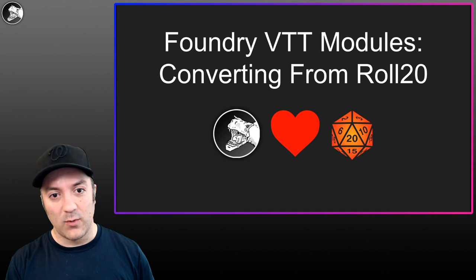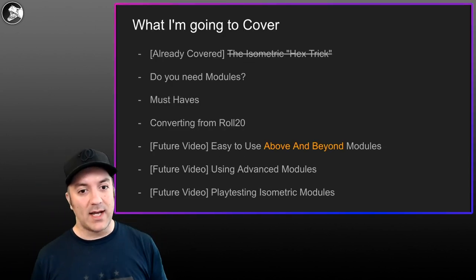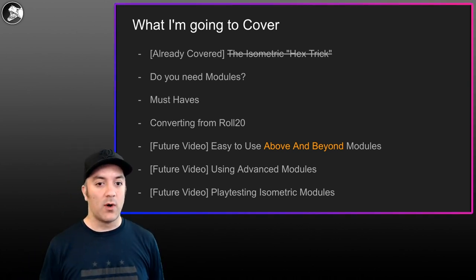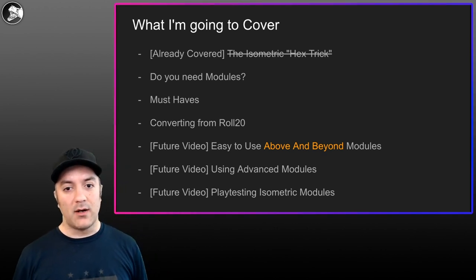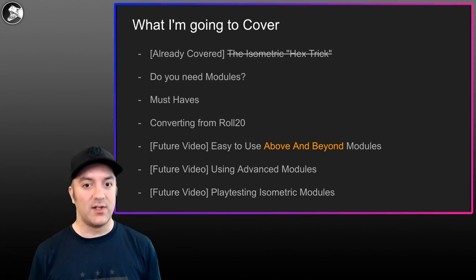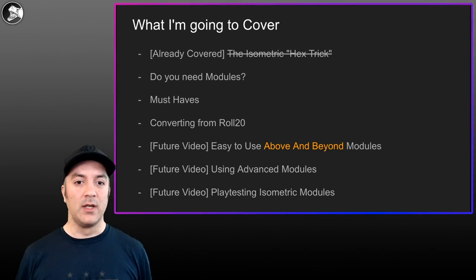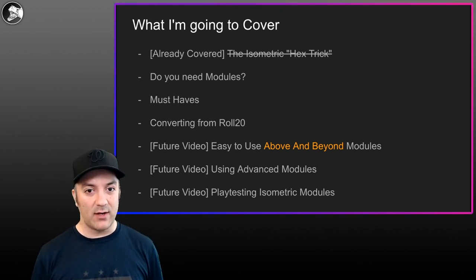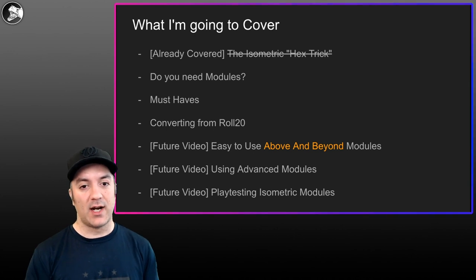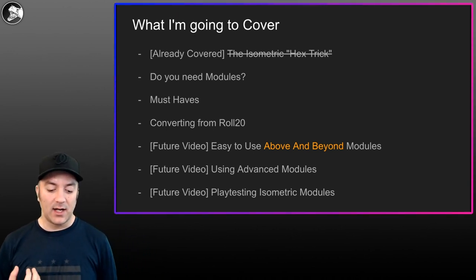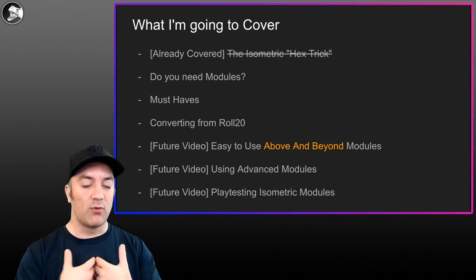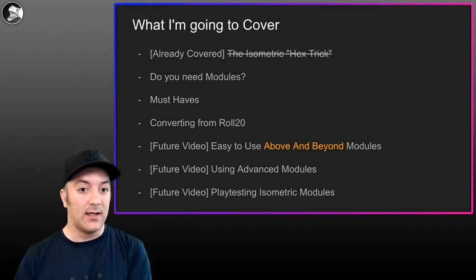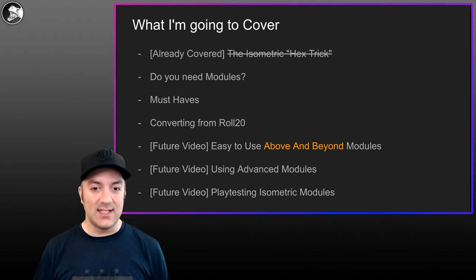First off, what am I going to cover? I have already covered my isometric hex trick — what I use to play isometric even though isometric grid support isn't fully there in Foundry VTT. In this video, I'm going to cover whether or not you actually need modules in Foundry VTT, one must-have module I highly recommend everybody install, and then a series of modules I found useful as a Roll20 person, so that Foundry VTT would be familiar to me and my players switching over.